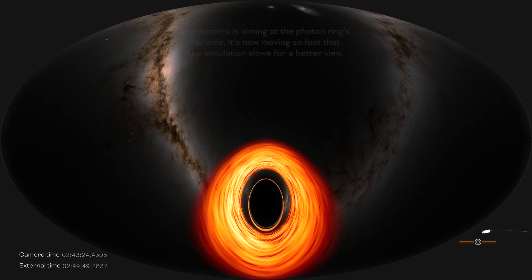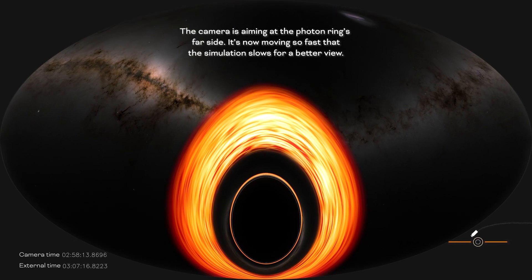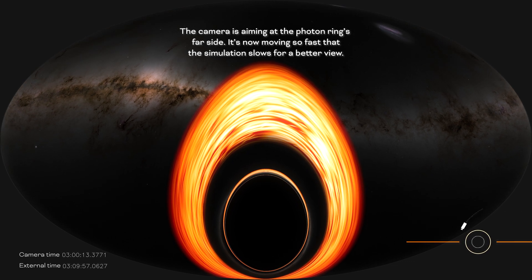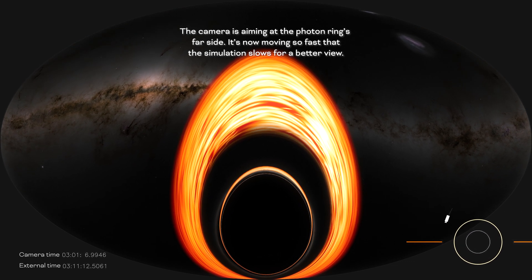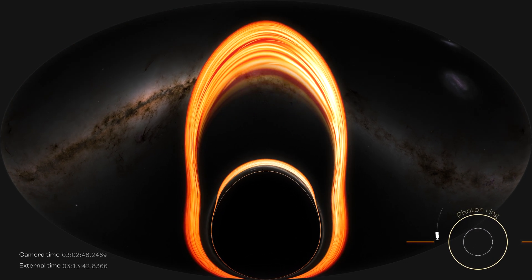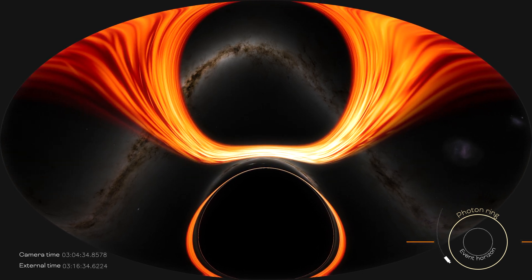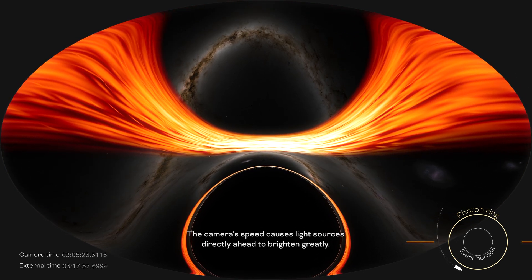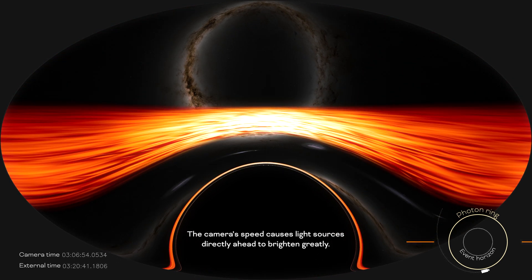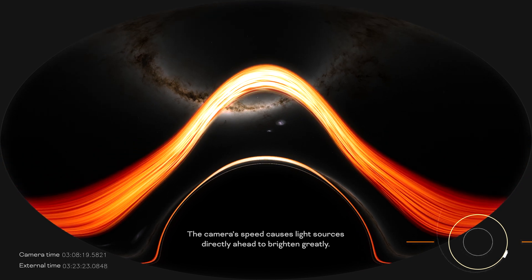The camera is aiming at the photon ring's far side. It's now moving so fast that the simulation slows for a better view. The camera's speed causes light sources directly ahead to brighten greatly.